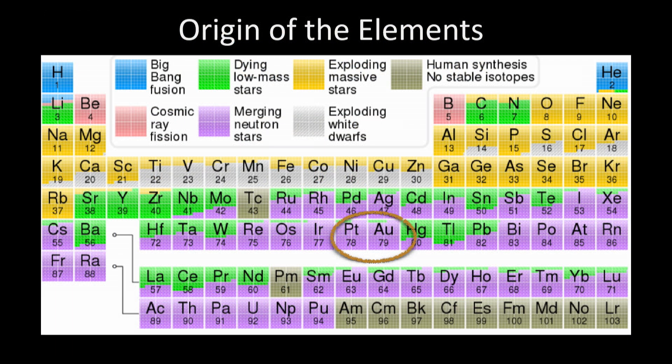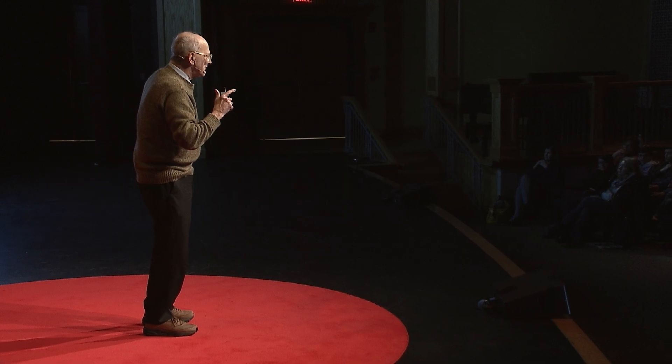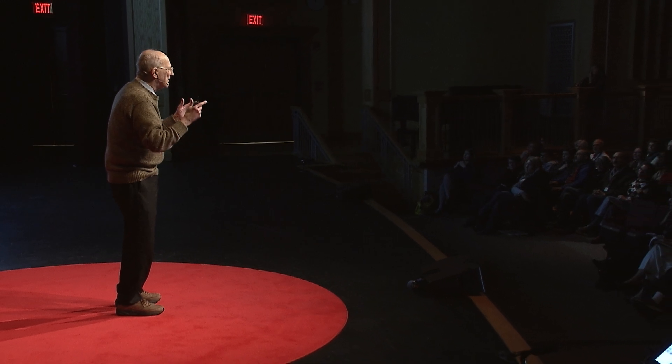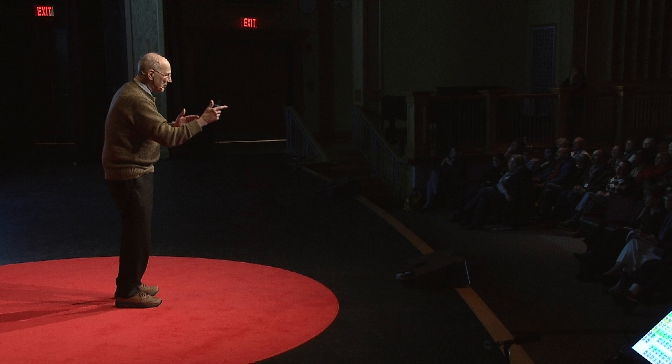One of the more interesting discoveries: many of you have seen the periodic table. We always knew where most elements of the universe were made — either in the early explosion of the universe or in stars — but we didn't know where the heavy elements came from. Things like gold and platinum: all the gold and platinum in the universe is made in these collisions of two neutron stars.